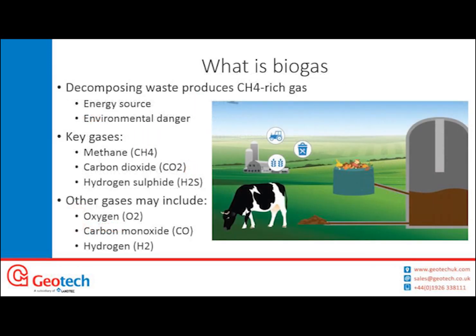So what is biogas? Biogas is made up of decomposing waste. The decomposing waste produces methane and this methane can then be burned to produce electricity or upgraded to be used in things like biodiesel vehicles. There are different scales of anaerobic digestion to produce biogas, from small-scale farming through to extremely large-scale industrial style digesters. The key gases are methane, carbon dioxide and hydrogen sulphide.